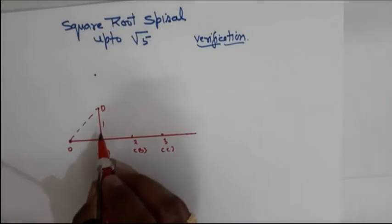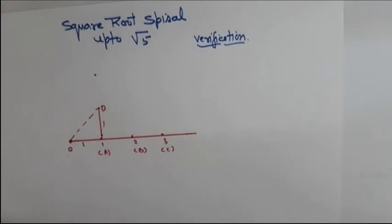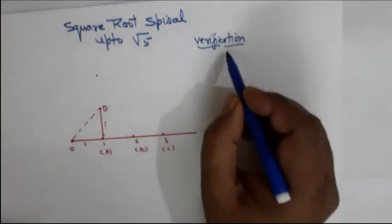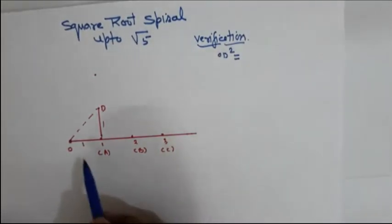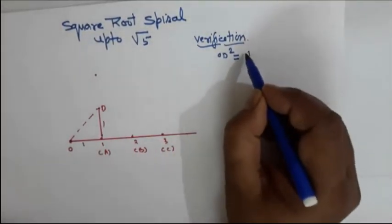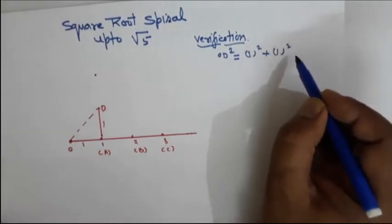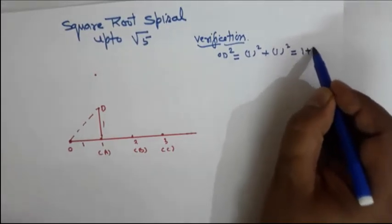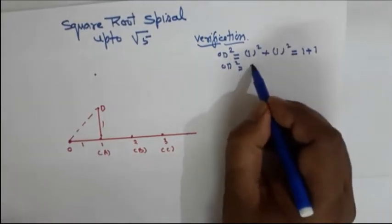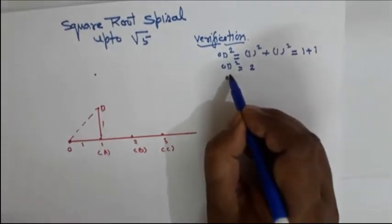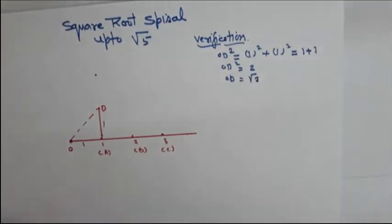Now see the verification. This base is 1 and this perpendicular is also 1. By Pythagoras theorem: OD² = 1² + 1² = 1 + 1 = 2. Therefore OD = √2. So this line OD has the value of square root of 2.